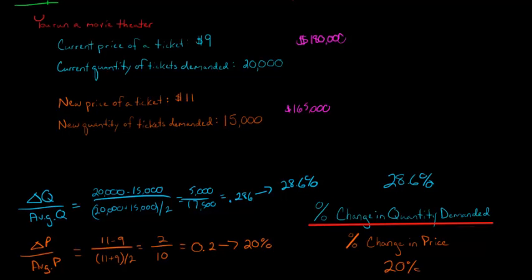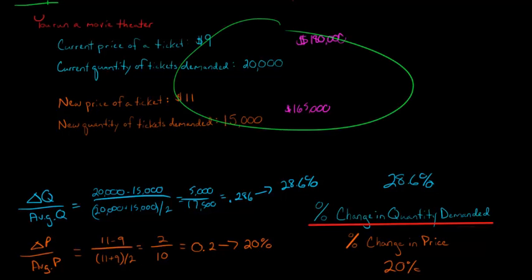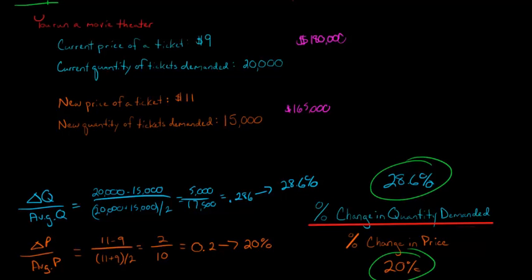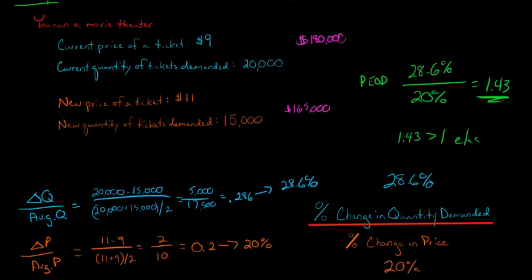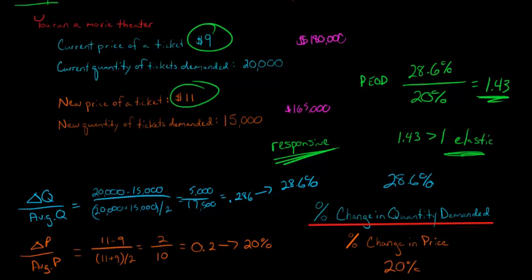Our price elasticity of demand for this $2 price increase is 28.6% divided by 20%, which rounds to 1.43. Remember, we said that if the number is greater than 1 — which 1.43 is — we would say that demand for these movie tickets, at least within this price range from $9 to $11, is relatively elastic. That means consumers are very responsive to a change in price.